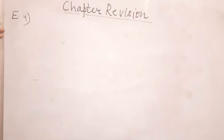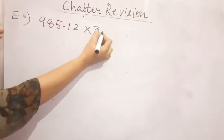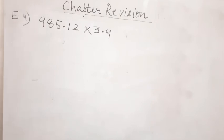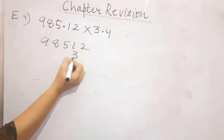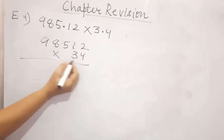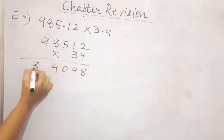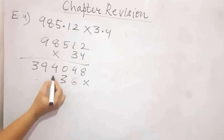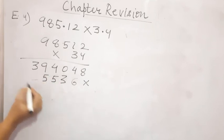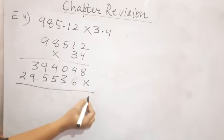Question number four is 985.12 multiplied by 3.4. Both are decimal numbers, so again remove the decimal points and multiply using the standard process. 4 twos are 8; 4 ones are 4; 4 fives are 20; 4 eights are 32, 34; 4 nines are 36, 39. Now the next digit 3: 3 twos are 6; 3 ones are 3; 3 fives are 15; 3 eights are 24, 25; 3 nines are 27, 29.